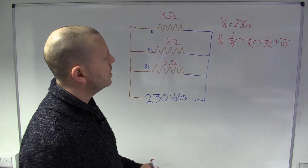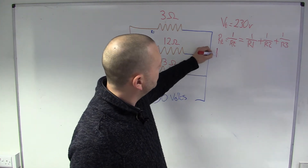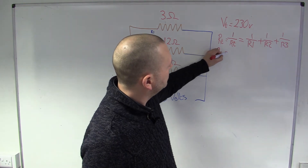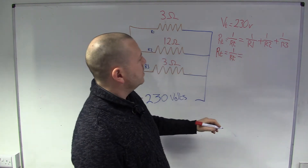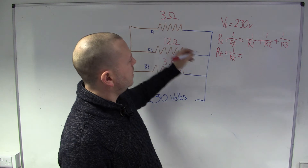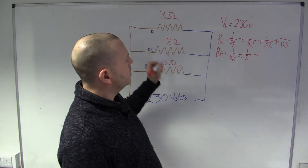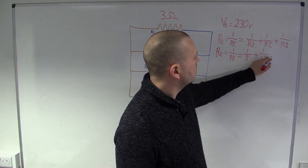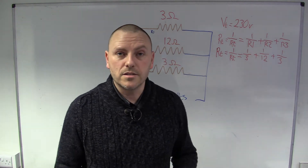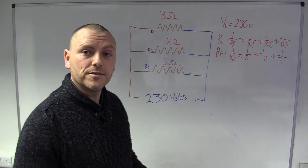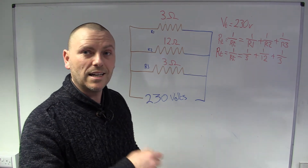So how do we do this in real terms? Our equation is: 1 over Rt equals 1 over R1 — in this case 1 over 3 — plus 1 over 12, plus 1 over 3 again. Now they are fractions, so you can add them as if they're fractions, and whatever your answer is, flip it on its head again, and that will be your total.